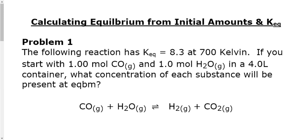We're going to make sure you get a lot of practice with each different type of problem so you get comfortable with the problem-solving process. We're going to calculate concentrations at equilibrium given different situations. Let's take a look at the first problem together. It says: the following reaction has a Keq of 8.3 at 700 degrees Kelvin. If you start with one mole of carbon monoxide and one mole of water in a four-liter container, what concentration of each substance will be present at equilibrium?